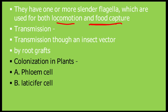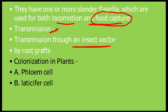Flagella are used for locomotion as well as capturing food. Transmission — how do they spread from one plant to another? Through insect vectors: certain insects spread them from plant to plant. Also by root grafting: when roots of plants are grafted, the pathogen spreads from one plant to another.